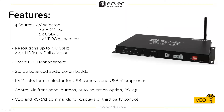Control can be via front panel buttons, with auto selection, or via RS-232. The auto selection is not based on 5-volt detection like other products in the catalog, but is based on signal presence — so it's a bit more accurate. Another very important function is that it can send CEC and RS-232 commands for display control or third-party control. We will see this in detail later.